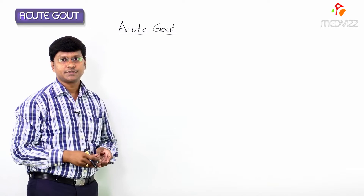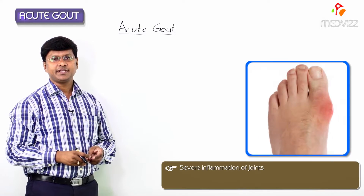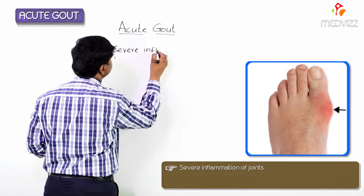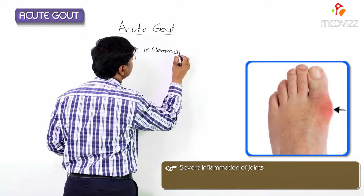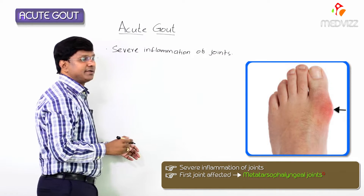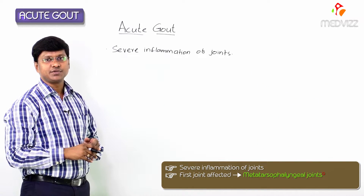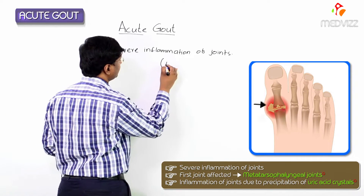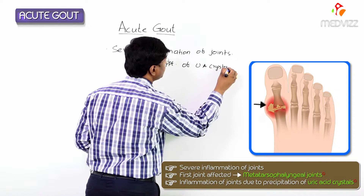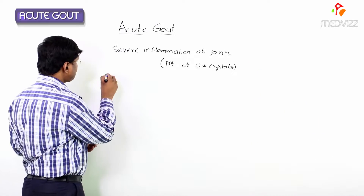Acute gout is manifested as severe inflammation of the joints. The first joint which is affected is the first metatarsophalangeal joint. This severe inflammation is mainly due to the precipitation of uric acid crystals within the joint.